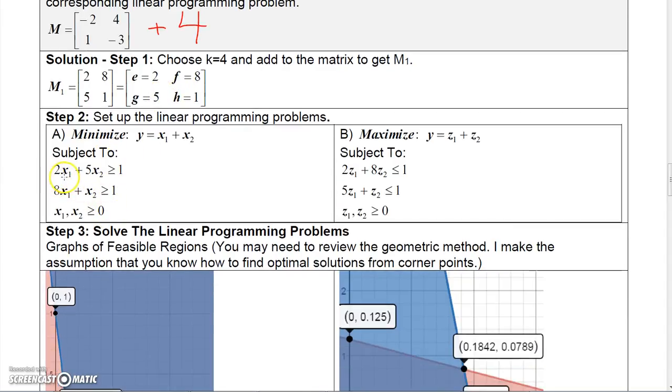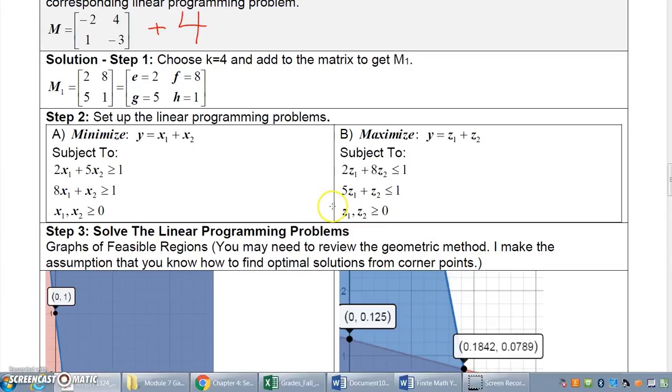Now, we're going to minimize Y equals X1 plus X2. We do EX1 plus GX2 is greater or equal 1. And then we have 8X1, that's F, and then HX2, that's 1, it's greater than or equal to 1. And then we can solve this. Our other problem, we want to maximize Y equals Z1 plus Z2. And here, we have EZ1 plus FZ2 is less than or equal to 1. And then GZ1 plus HZ2 is less than or equal to 1, and we solve that.